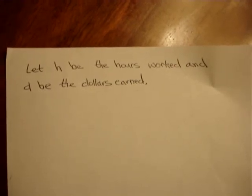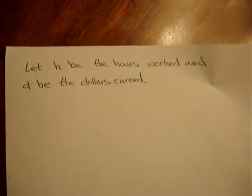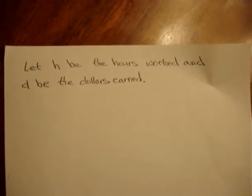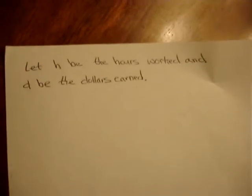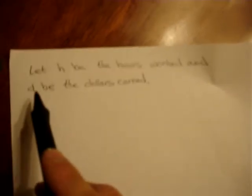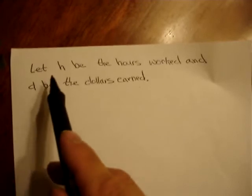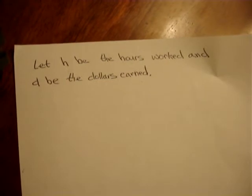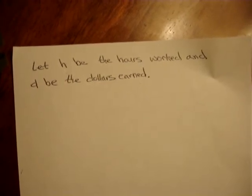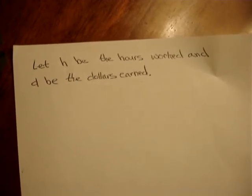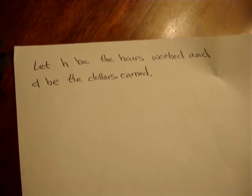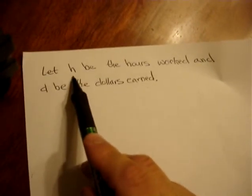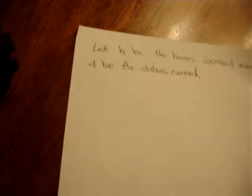So I ask myself, how much did I earn? The answer is, it depends on how many hours you worked. So the amount of money I earn, D, depends on how many hours I work. In other words, I'm independently choosing how many hours are being worked, and that gives me the dollar amount. So H is my independent variable, and D is my dependent variable.